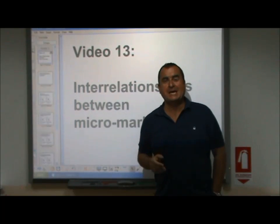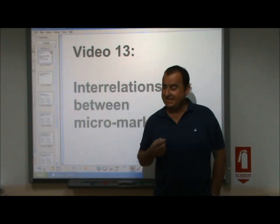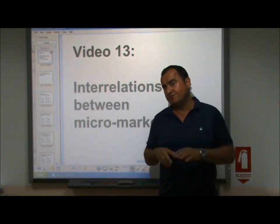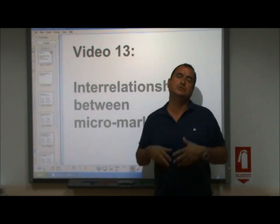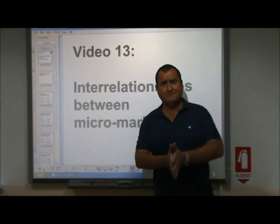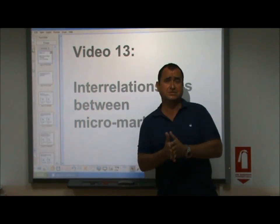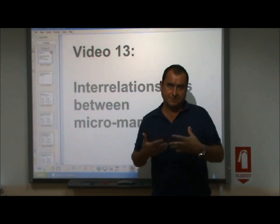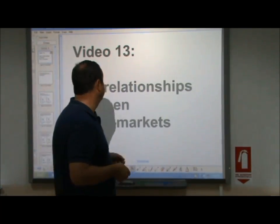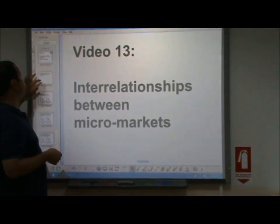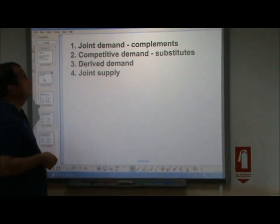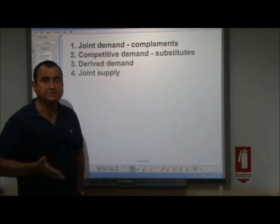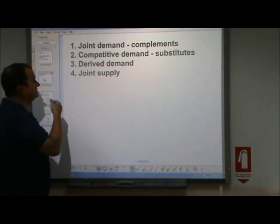Hello, video 13. Here we look at the interrelationship between markets, something we've already touched upon when we talk about substitute goods and complement goods, but now we specifically look at four concepts which explain the connections between micromarkets. In this video we're going to look at joint demand, which are complement goods, competitive demand, substitute goods, derived demand, and joint supply.